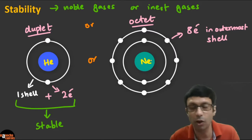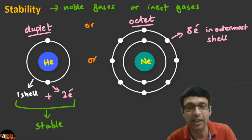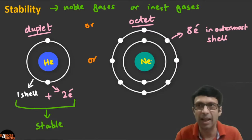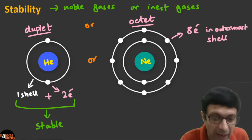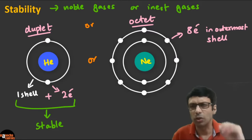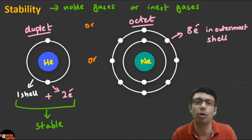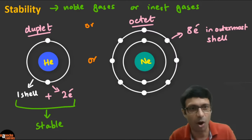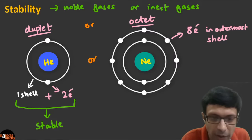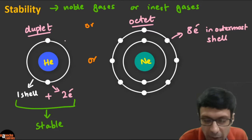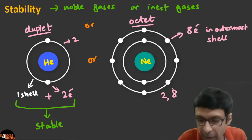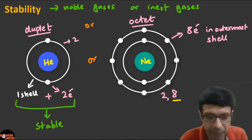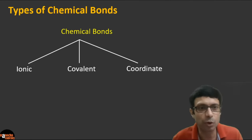The atoms that follow these rules are the noble gases, also called inert gases. Helium follows the duplet rule, while neon, argon, and xenon have eight electrons in the outermost shell and follow the octet rule. All other atoms are trying to become like a noble gas to get stability, and that is why they form chemical bonds — to get to the stable configuration of either the duplet or octet rule.